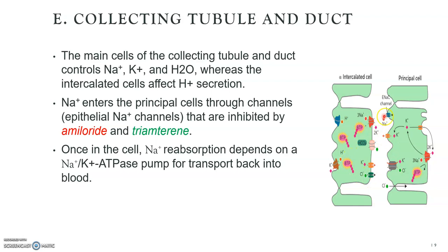Sodium enters the principal cells through channels called ENaC — the epithelial sodium channels. These channels can be inhibited by amiloride and triamterene. So this is where amiloride and triamterene act upon — they block the epithelial sodium channels, the ENaC.